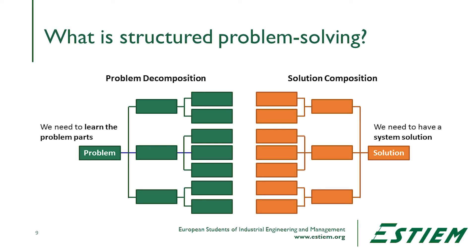That is what we mean by structured problem solving — understanding how the process flows, seeing all the components of the problem and how they lie within it, resolving the issues, and putting them back together in a system that delivers the performance we were targeting. Now that you understand the thinking process behind the Six Sigma methodology, let's start thinking about what we mean by DMAIC and how it works in a process.